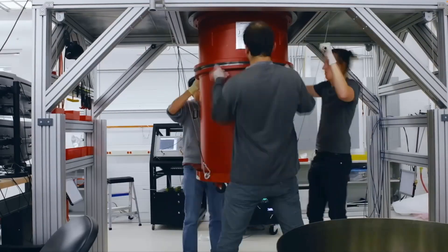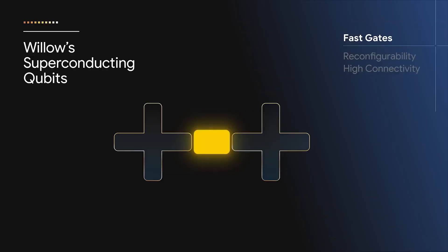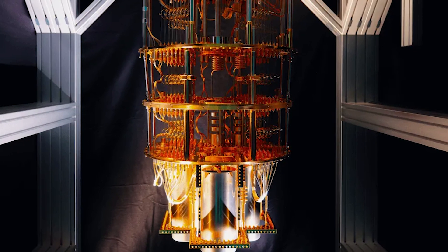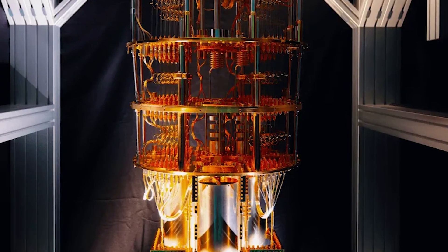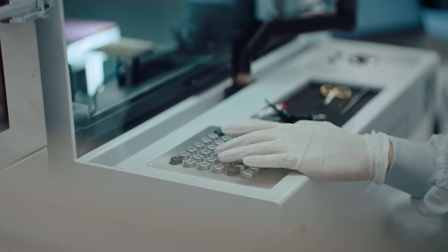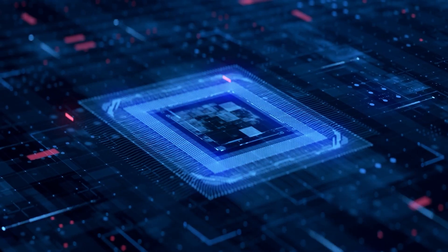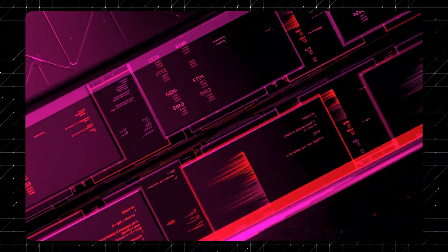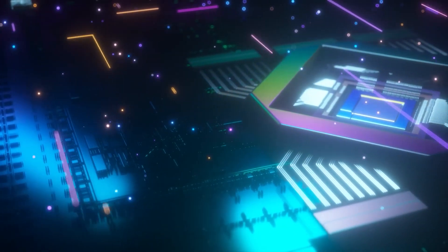A key highlight of Willow's design is its T1 times. These measure how long qubits can maintain their quantum state, a critical factor in ensuring accurate computations. Willow achieves T1 times nearing 100 microseconds, a five-fold improvement over its predecessors. This leap in performance directly enhances the chip's ability to handle more intricate and sustained calculations, making previously unfeasible tasks possible.